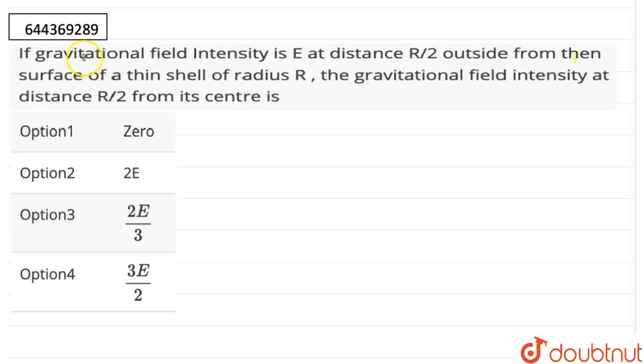Hello, so the question here is the gravitational field intensity is E at a distance R/2 outside from the surface of a thin shell of radius R. The gravitational field intensity at a distance R/2 from its center is: the options are 0, 2E, 2E/3 and 3E/2.